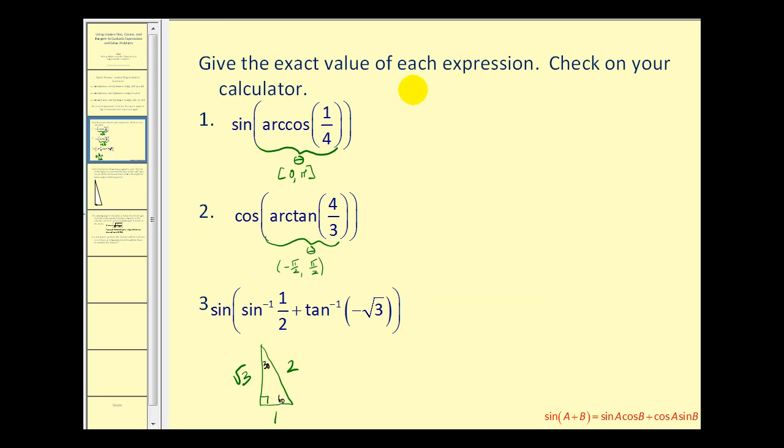So for example, here on number one, we have the sine of arccos(1/4). Arccos(1/4) is going to return an angle on the closed interval from 0 to π that has a cosine function value of 1/4.